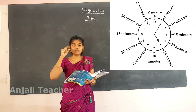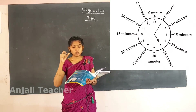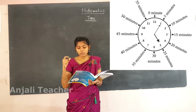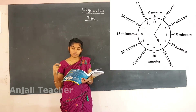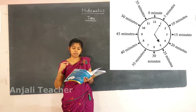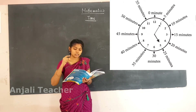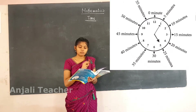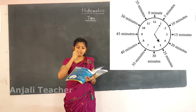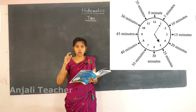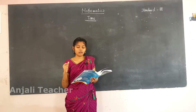When the minute hand points to 1, it is 5 minutes. 2 is 10 minutes, 3 is 15, 4 is 20 minutes, 5 is 25 minutes, 6 is 30 minutes, 7 is 35 minutes, 8 is 40 minutes, 9 is 45 minutes, 10 is 50 minutes, 11 is 55 minutes, and then again it is 12. So these are the values — the long hand shows the minute hand.